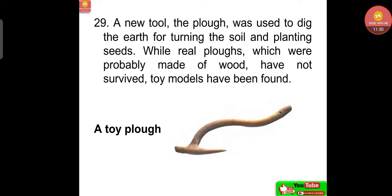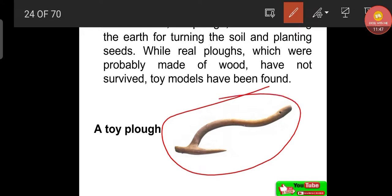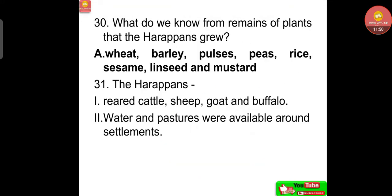A new tool — the plough — was used to dig the earth, turn the soil, and plant seeds. While real ploughs made of wood have not survived, toy models have been found. From plant remains, we know the Harappans grew wheat, barley, pulses, peas, rice, sesame, linseed and mustard. The Harappans also reared cattle, sheep, goat and buffalo, with water and pastures available around settlements.